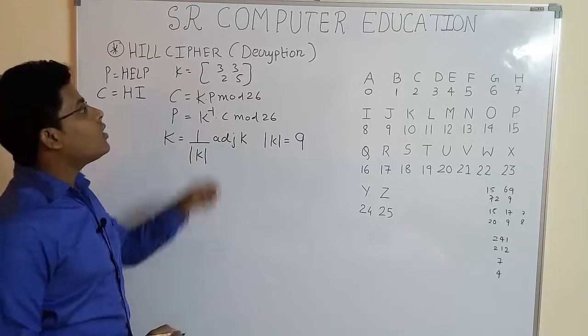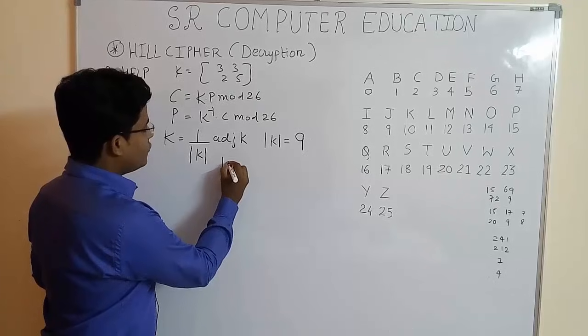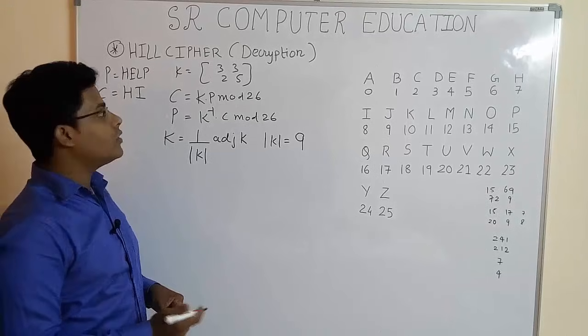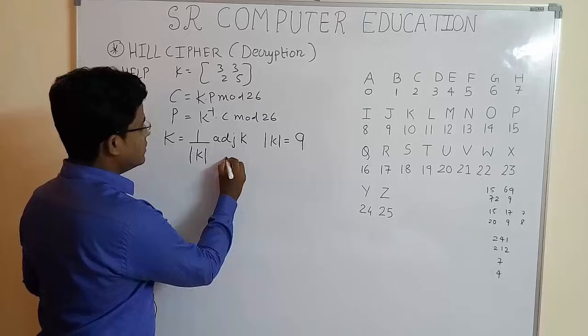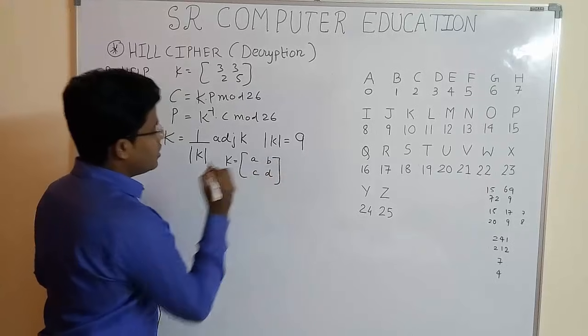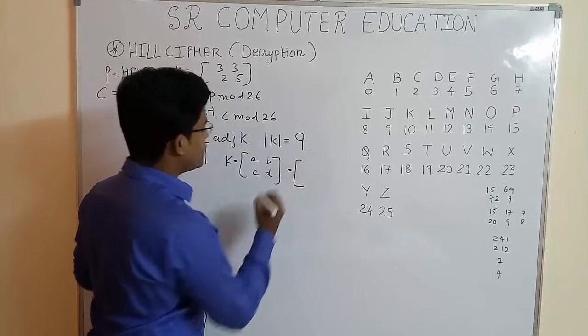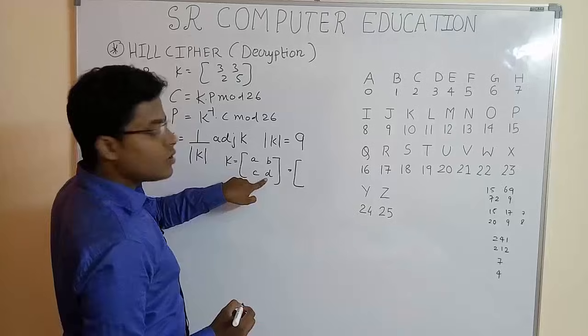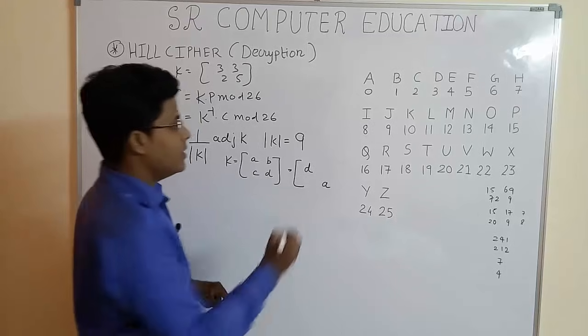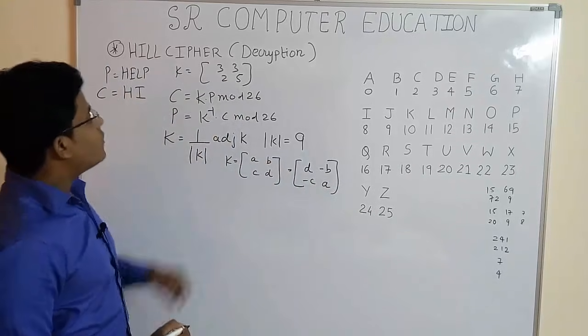Now to find the adjoint of the given matrix, you have to follow another formula. Suppose the given matrix is K equal to [a, b; c, d]. You have to remember adjoint of this 2 cross 2 matrix, you have to just change the position of these 2 elements, that is d and a, and you have to change the sign of these elements, that is minus b and minus c.